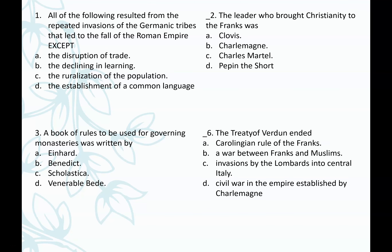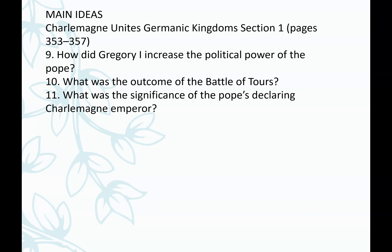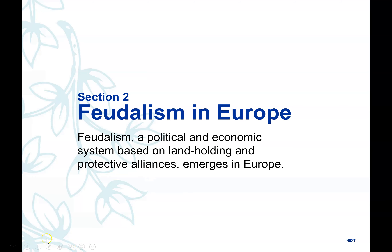Let's answer these review questions: Which of the following did not result from Germanic invasions that led to the fall of Rome? Who brought Christianity to the Franks? Who wrote the book of rules for governing monasteries? What did the Treaty of Verdun end? And for the main idea questions: How did Gregory the First increase the political power of the pope? What was the outcome of the Battle of Tours? And what was the significance of the pope crowning Charlemagne emperor? Answer those questions — that's your homework for today.